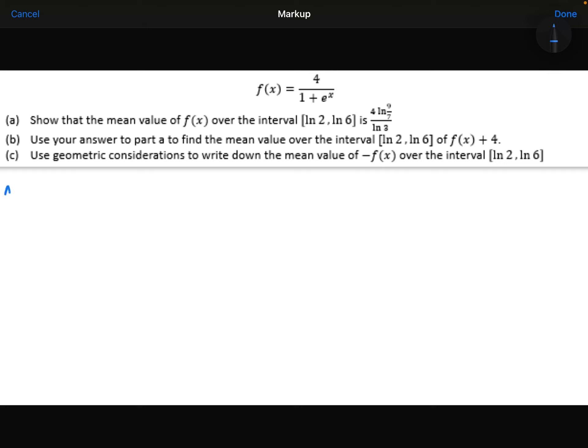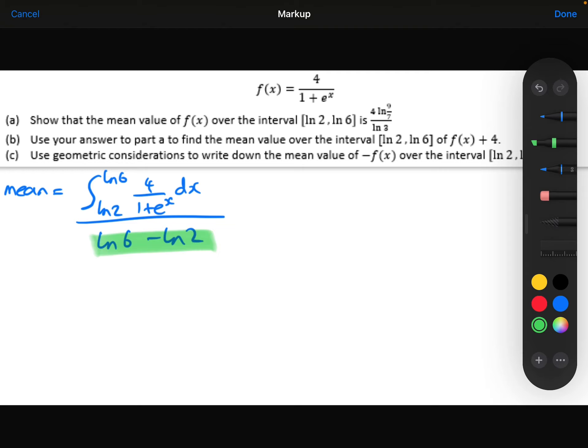Right, so let's write down the formula. So we're integrating from ln 2 to ln 6 of 4 over 1 plus e to the x with respect to x, all divided by ln 6 minus ln 2. Now, the denominator there, ln 6 minus ln 2. I know that's the same thing as ln 6 over 2 by the laws of logarithms. So that's ln 3. So I can replace all of that with a division of 1 over ln 3.